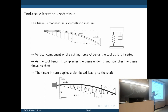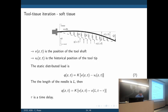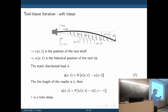Under the tool shaft we have a collection of springs and dampers applying a force back to the needle. We have a distributed load Q, and the deflection of the needle at any point along its shaft we call v(z, t) — z for position along the shaft, t for time. The main assumption: if v is the position of the tool shaft and v_t is the historical position of the tool tip — i.e., the tunnel cut by the tip — then the difference between them gives the amount of tissue displacement.